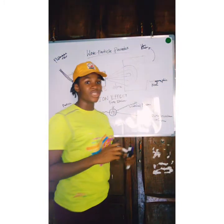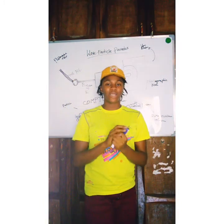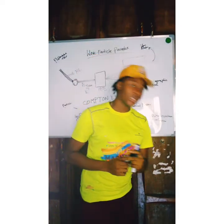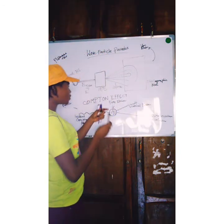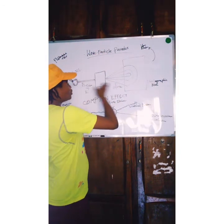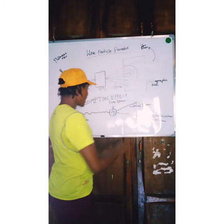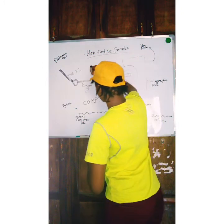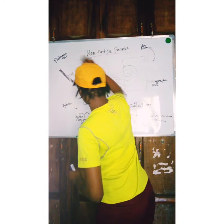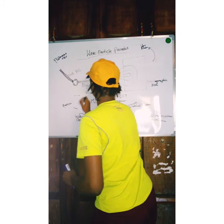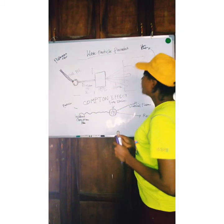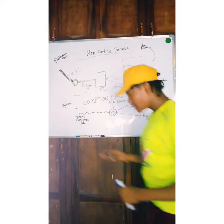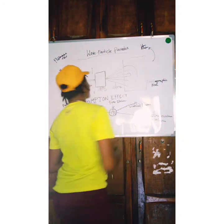Those are the two things you have to know about the particle nature of light and matter. In the wave nature, diffraction is shown as a property of a wave. In the Compton effect and the photoelectric effect, electrons are produced — and since electrons are particles, this shows the particle nature of light.